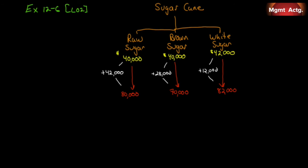Exercise 12.6 is a sell-or-process-further question on learning objective 2. In a joint processing operation, Nolan Company manufactures three grades of sugar from common input sugar cane. Joint processing costs up to the split-off point total eighty thousand dollars per year, allocated on the basis of total sales value at split-off. Sales values at split-off are: raw sugar forty thousand, brown sugar forty thousand, white sugar forty-two thousand.